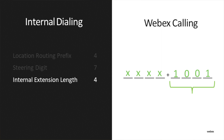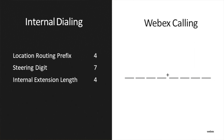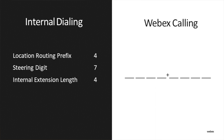We also have one more configuration: the internal digit length. We'll set that to four digits as well, because for our organization everyone's extension is going to be four digits regardless of where they're located. So if we're Wade Wilson in Seattle and want to call James Howlett in Japan at extension 1004, we'd dial 7081-1004. Going the other way, if James Howlett in Japan wants to call Wade Wilson in the U.S., he dials 7001-1003.